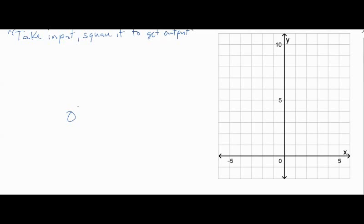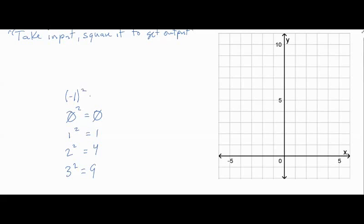Zero — because zero squared is zero. If my input is one, I square it — the output is one. If my input is two, I square it — the output is four. Two squared is four. Three squared — input is three, square it, I get nine. What about negative one squared? Negative one times negative one is positive one, so it's still positive. Negative two squared: negative two times negative two is positive four. Negative three squared is positive nine. So I've got these inputs, and this function squares them and spits them back out.